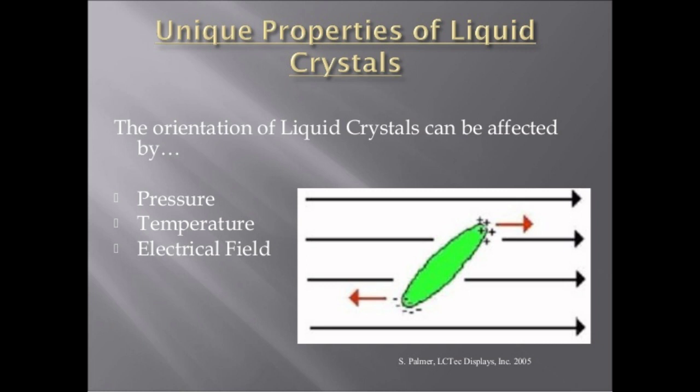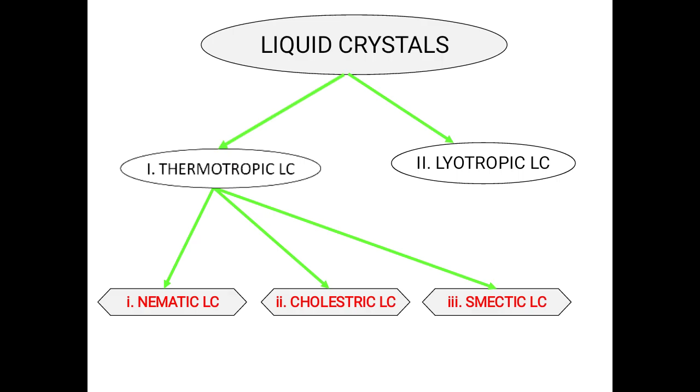For example, based on temperature, there is a separate class called thermotropic liquid crystals. Based on electrical field, they can be used in electrical devices, playing a very significant role nowadays. Regarding the classification of liquid crystals: they are majorly classified into thermotropic liquid crystals and lyotropic liquid crystals. Thermotropic liquid crystals are further classified into nematic, cholesteric, and smectic liquid crystals.